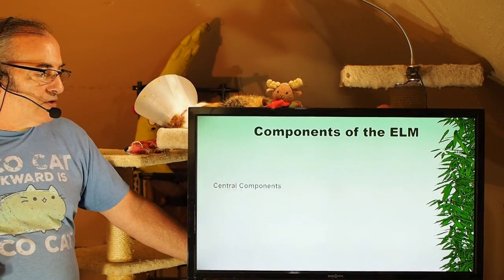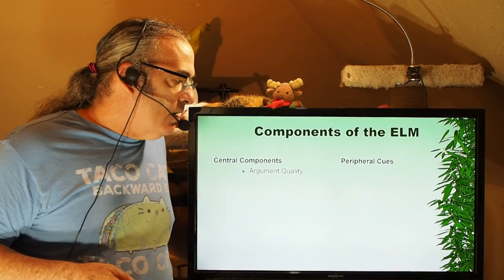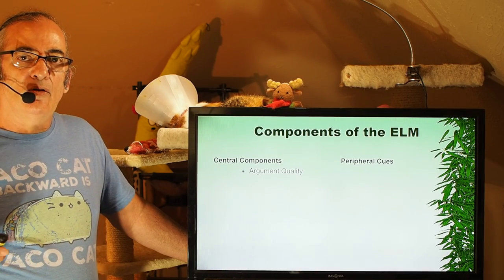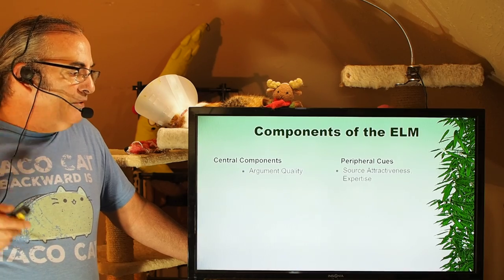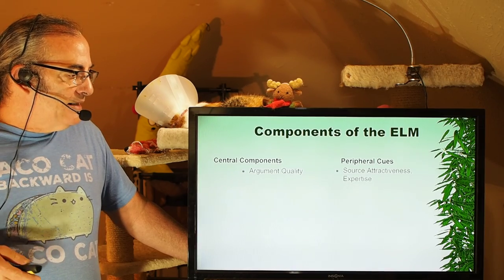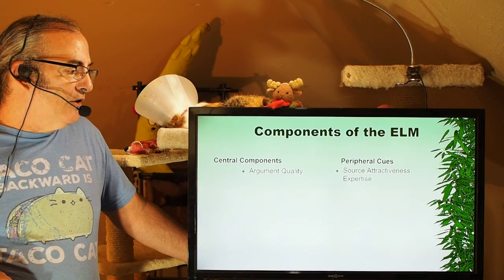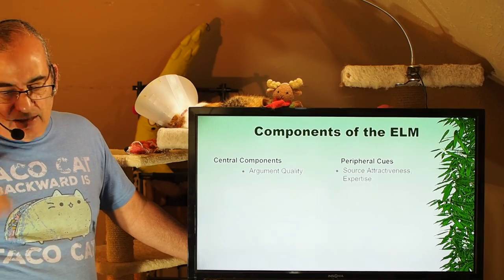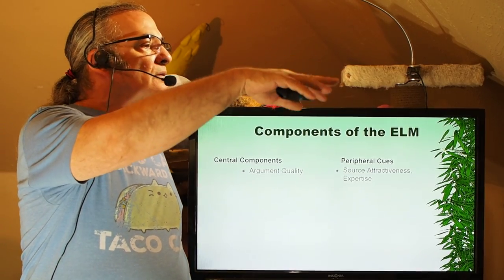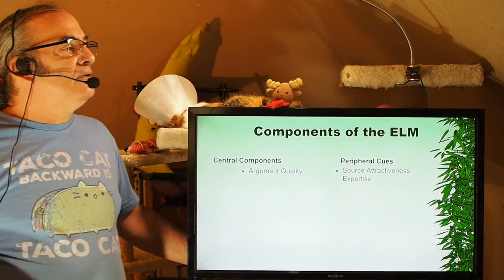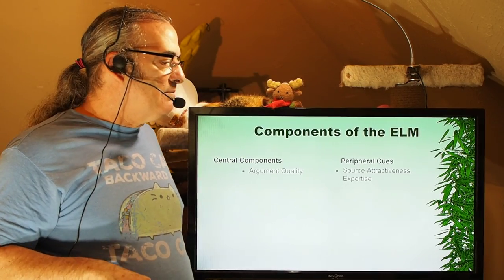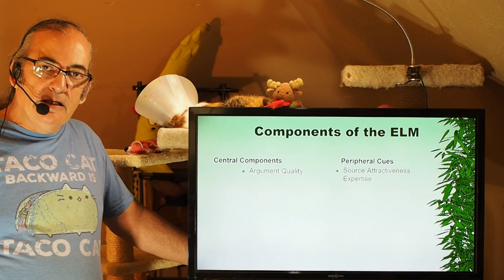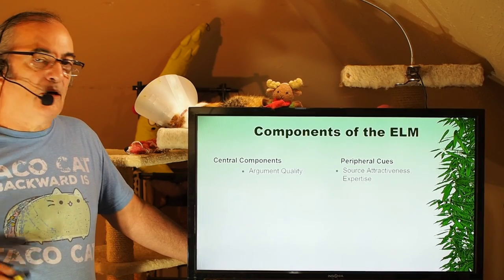Let's look at the central components of the ELM. Argument quality is one: make sure you have a high-quality argument that stands the test of critical thinking. Peripheral cues: for those who are less motivated and less able, make sure the source delivering the message is attractive and appears to have expertise. If someone isn't thinking much and sees a guy in a white coat selling Colgate, they think 'lab coat equals dentist, equals expertise,' and they're on board — not the critical thinking approach.